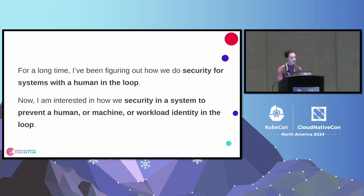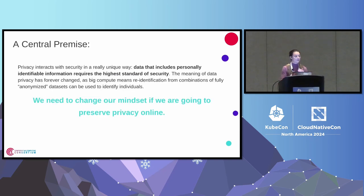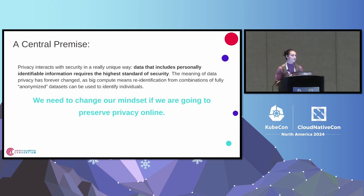For a long time I've been thinking about how we build security systems with a human in the loop intentionally — knowing that humans are in the loop both maliciously, benignly, and sometimes just making mistakes. I want to design systems against that too. I'm also interested in designing systems where we prevent human or machine or workload identity that we don't want into the loop. Now I'm going to tell you what I believe is the largest threat that we are able to protect from.